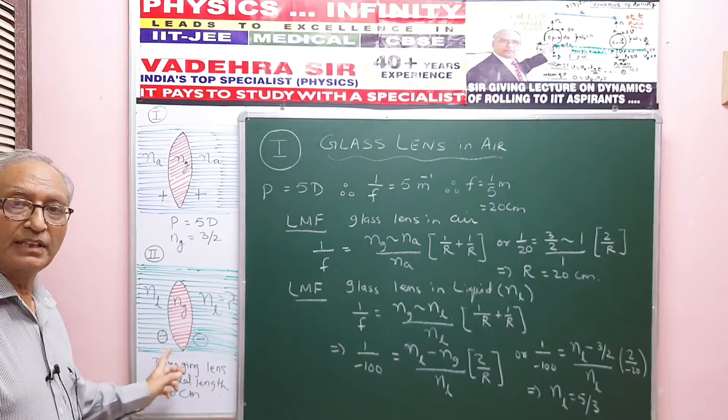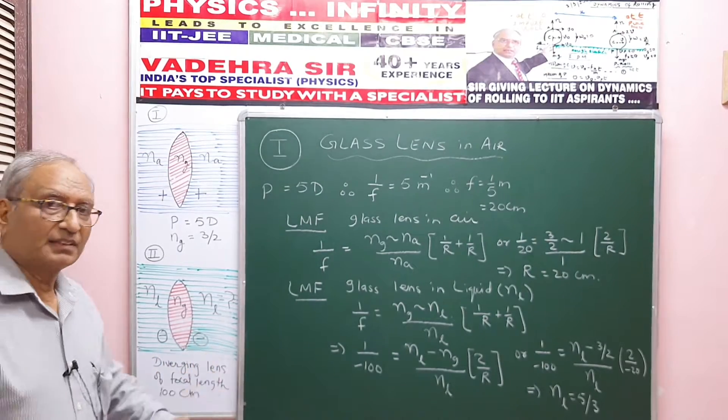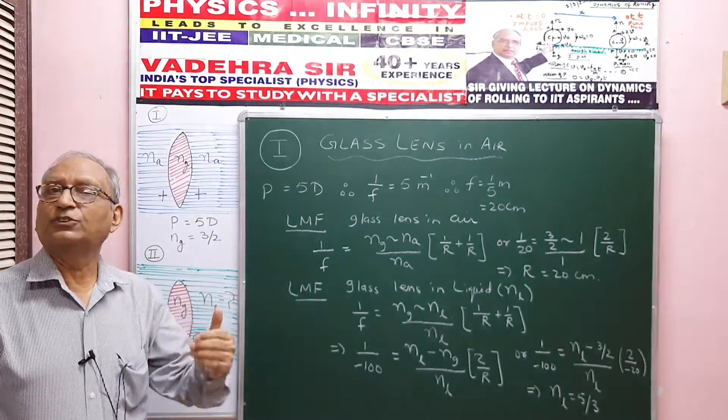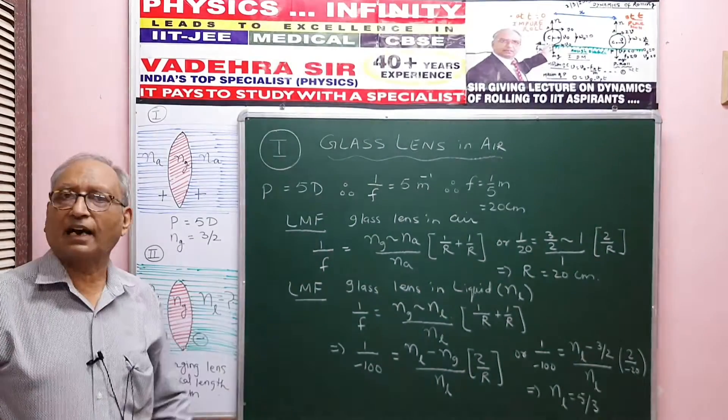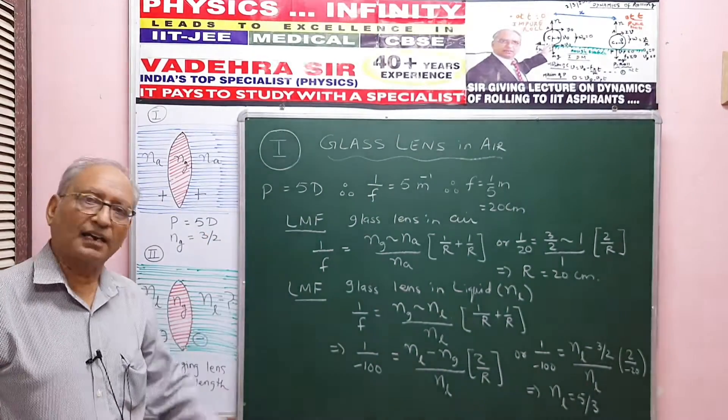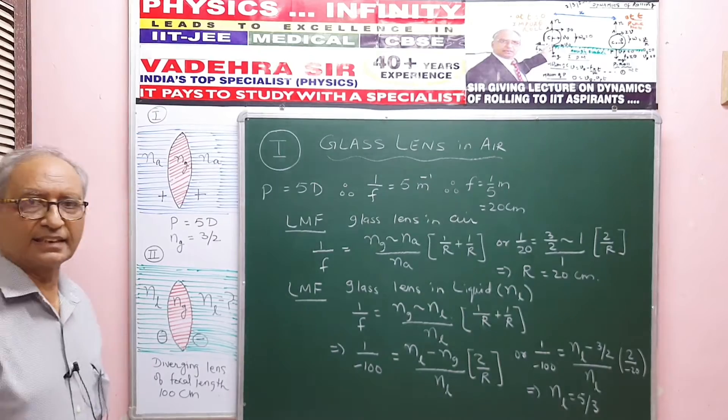Now let's use the lens maker formula in two cases. From the first case we'll get R, and then we use the value of R in the second case and get the value of NL.